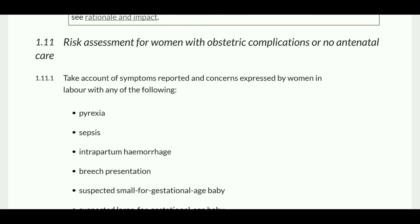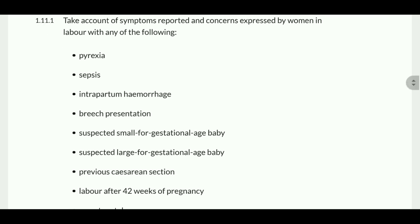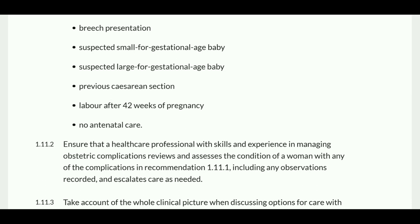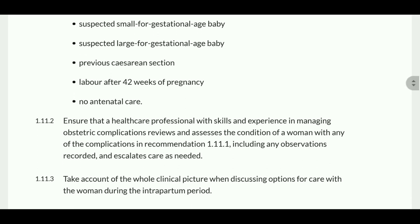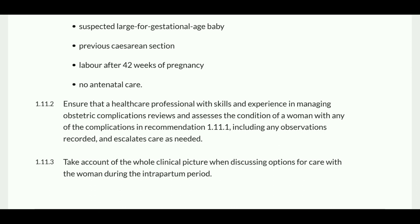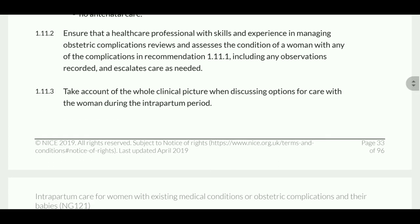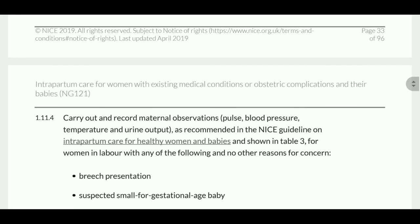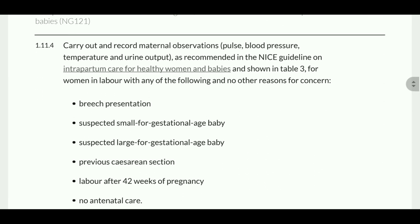For risk assessment for women with obstetric complications or no antenatal care, take account of symptoms and concerns expressed by the woman in labor with any of the following: pyrexia, suspected intrapartum hemorrhage, breech presentation, suspected small-for-gestational-age baby, suspected large-for-gestational-age baby, previous cesarean section, labor after 42 weeks of pregnancy, or no antenatal care. Ensure that healthcare professionals with the skill and expertise in managing obstetric complications review and assess the condition of the woman. Carry out and record maternal observations: pulse, blood pressure, temperature, urine output, as recommended in the NICE guideline.